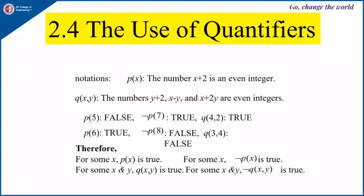Suppose the open statement is p(x) such that x plus 2 is an even integer, and another open statement q(x, y) such that y plus 2, x minus y, and x plus 2y are even integers. If we replace x by some value in p(x) and the result is false, we write the truth value of p(x) as false. The negation of p(7) is true because p(7) is false.